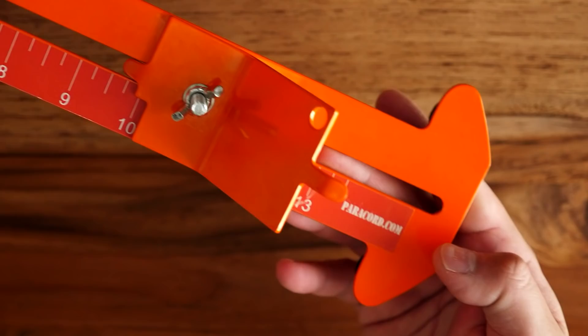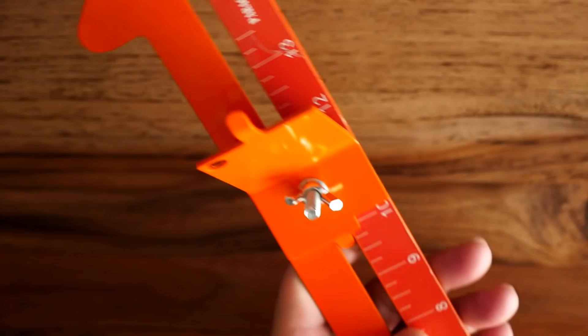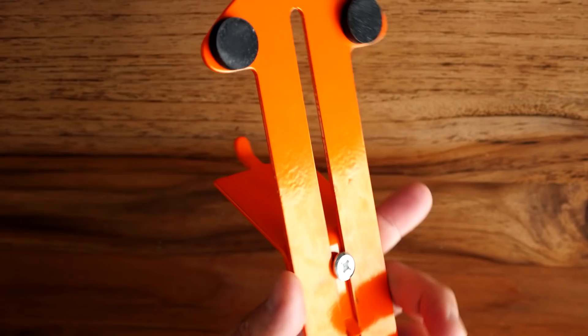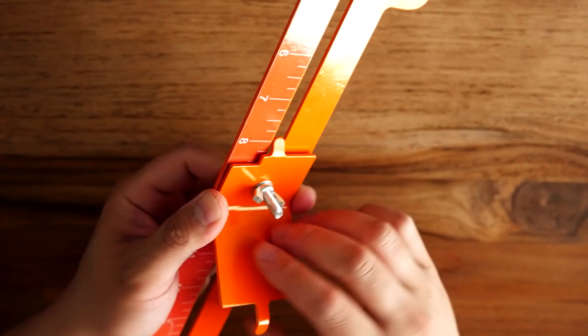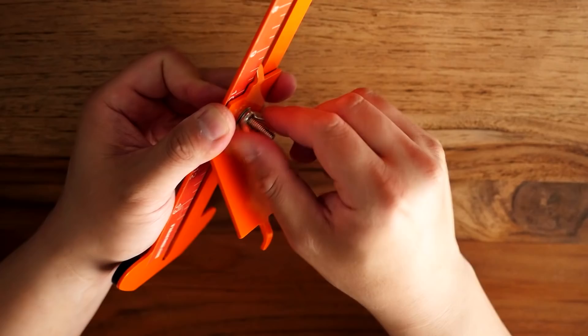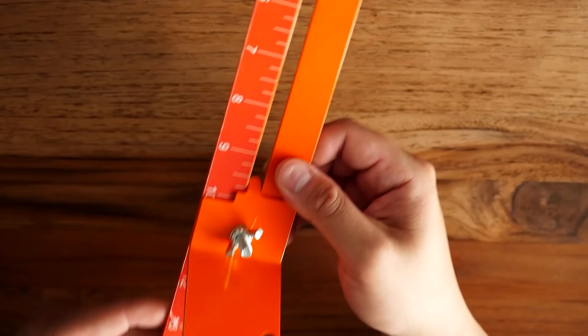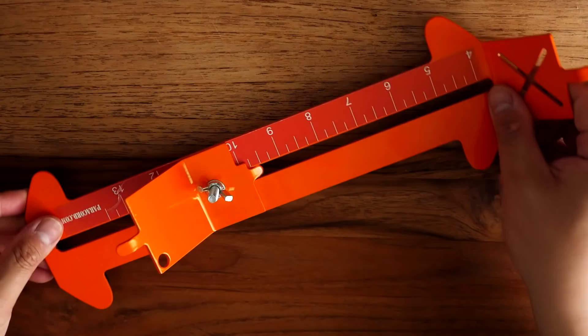Getting into it, it's a standard-looking metal-constructed paracord jig. It has two metal tabs up top and bottom for you to hook your buckles onto, and you've got a screw in the middle with a wing nut that you can tighten and loosen to adjust the length. It's got ruler markings on it as well to gauge your size. The main difference, of course, is that it's also a monkey's fist jig.